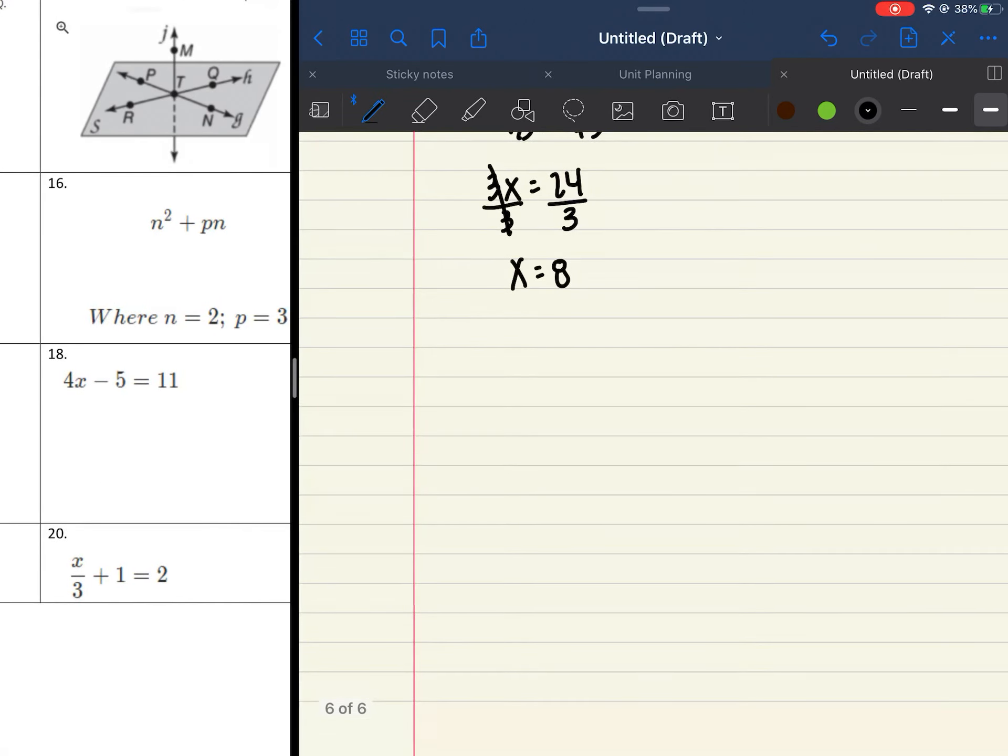And then our last problem is number 20. This is where the fraction comes into play. So x over 3 plus 1 equals 2. Now, when we did these, I told you you needed to get that fraction by itself first. So I'm going to subtract 1 from both sides. When I do that, I have x over 3 equals 1. And we're going to put that 1 over another 1. Make it into a fraction so that we can cross multiply. 3 times 1 is 3, which is equal to 1 times x, which is just x.